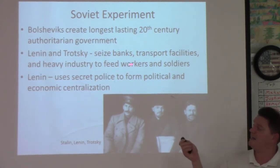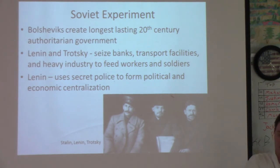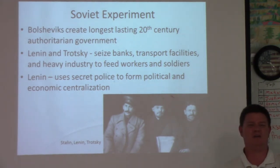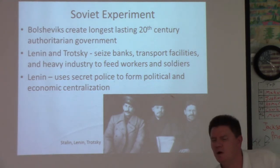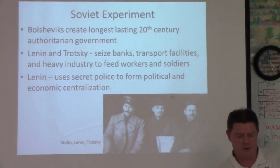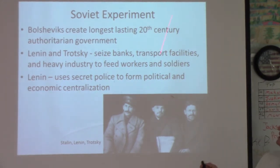Two years later, by 1917, the Russians had endured horrific millions of casualties. The war was going badly. The leadership was poor. The czar had left to go take charge at the front, leaving the czarina — his wife, who was German — in power back in the city. So people couldn't trust her. In February of 1917, things were going to happen.